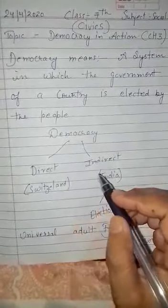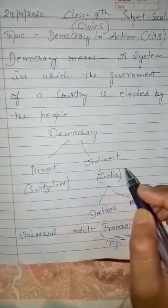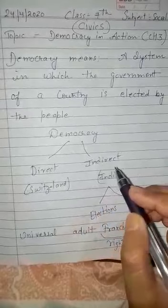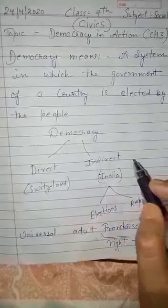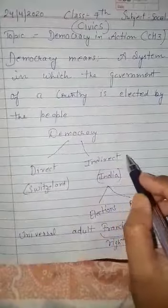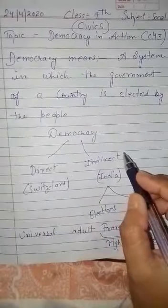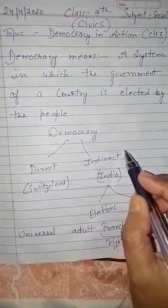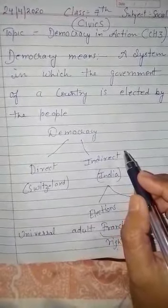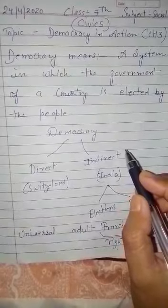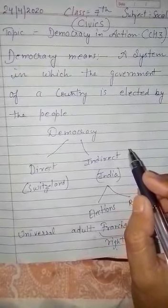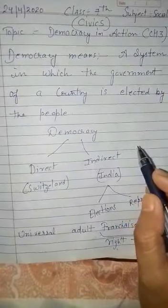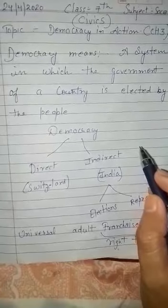Nowadays, all democratic countries in the world have adopted the indirect form of democracy. In the indirect form of democracy, people of the country have political power with them, and they are using this power through the representative whom they are electing.